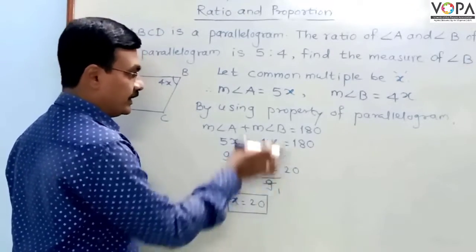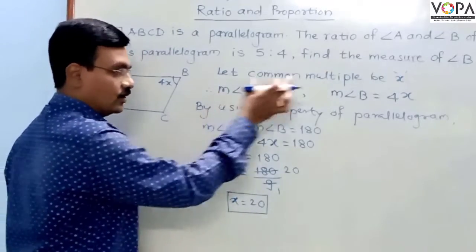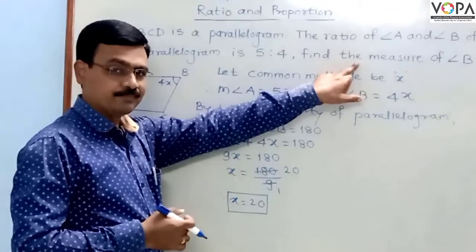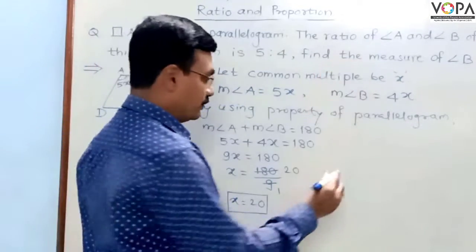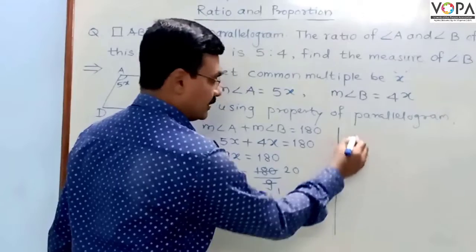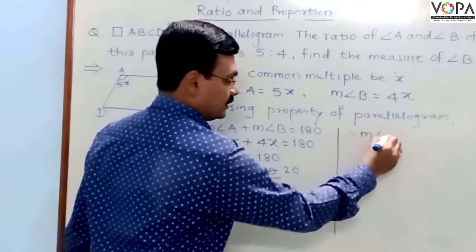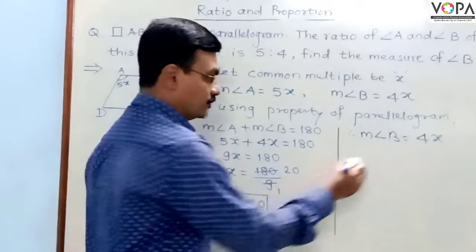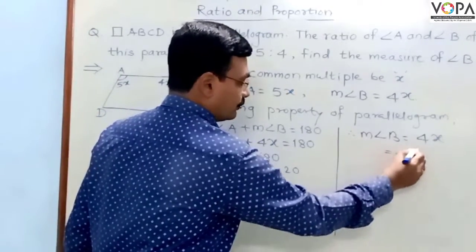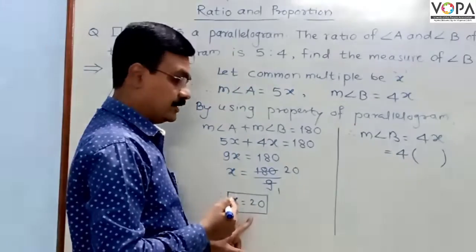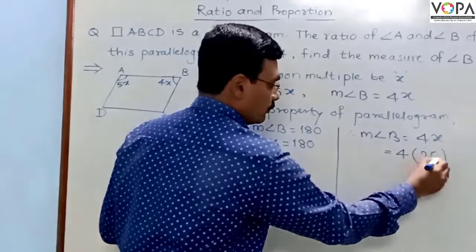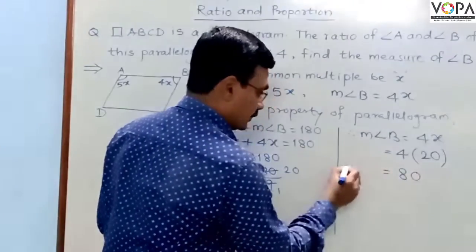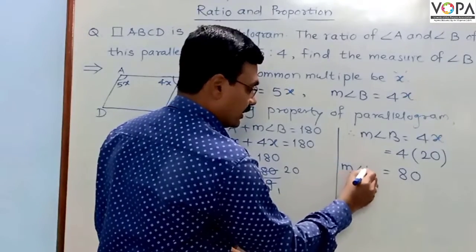With the help of this value, we can find measure of angle A or measure of angle B. In the question, it is mentioned that we find the measure of angle B. We can write measure of angle B equals to 4x. It was given as 4x. Therefore, 4 multiplied by the value of x, which is 20, gives us 4 multiplied by 20. That product is 80. It is the measure of angle B.